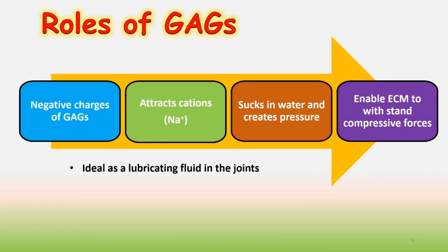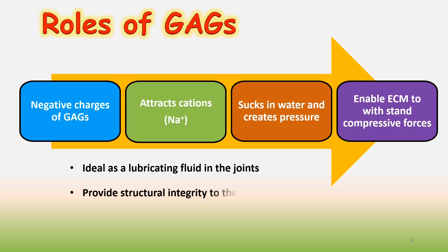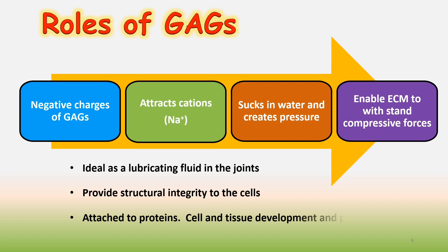Now we will discuss the roles of GAGs. The negative charges of GAGs attract cations and suck in water, creating pressure. This enables the extracellular matrix to withstand compressive forces. GAGs are ideal as a lubricating fluid in the joints. They provide structural integrity to the cells and they attach to proteins, supporting cell and tissue development and physiology. They also play a crucial role in cell signaling.